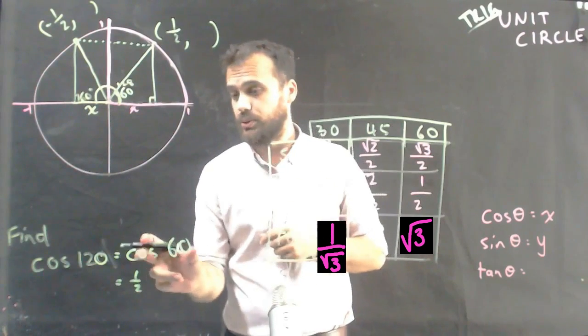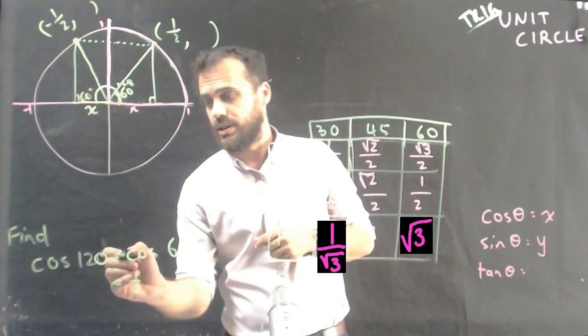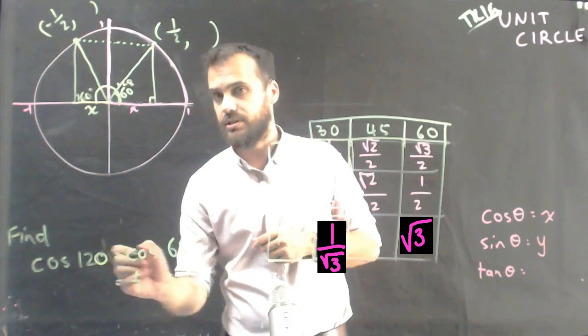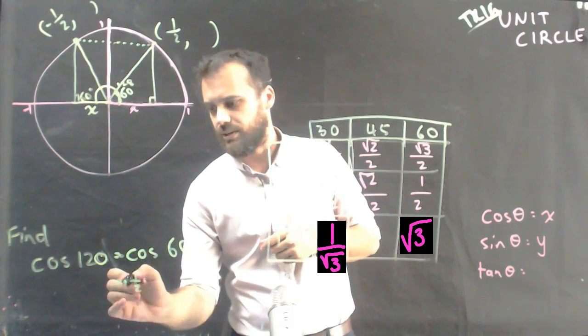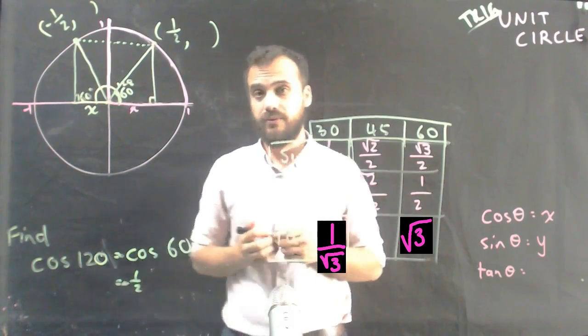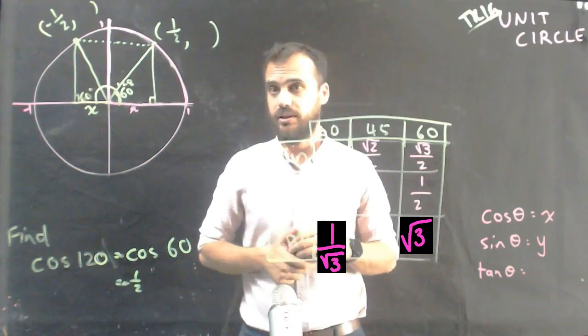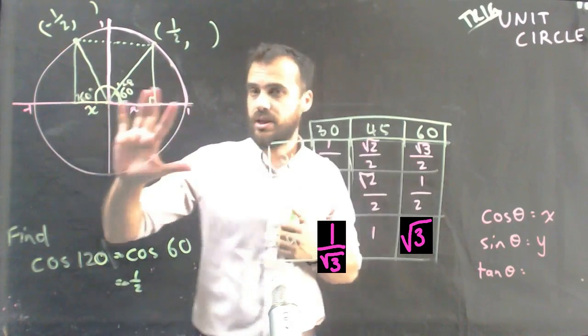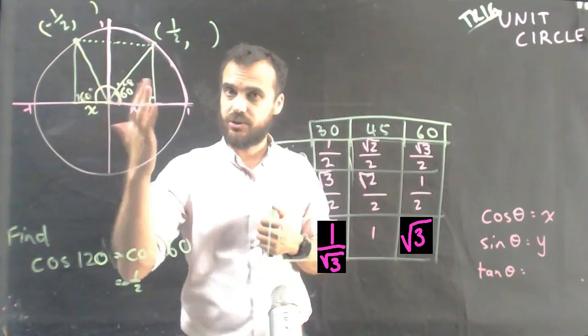So cos 120 isn't actually equal to cos 60. It's equal to negative cos 60, which means that cos 120 is not one half. It's negative one half. So there's a look at how we can use our symmetry here.